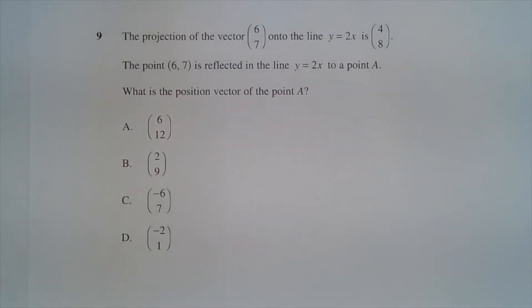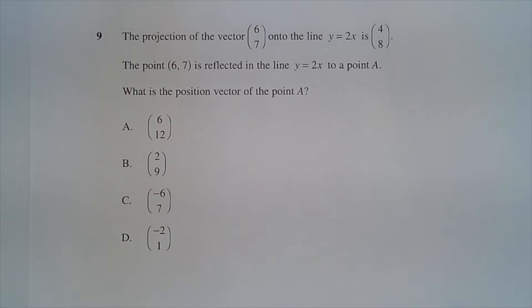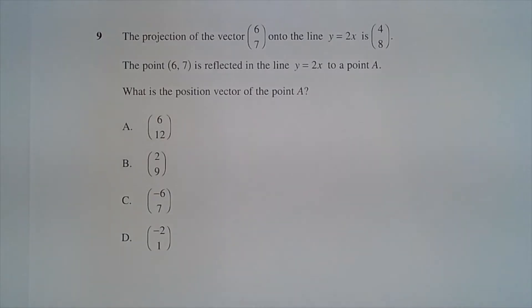Question 9. The projection of the vector 6i plus 7j onto the line y equals 2x is 4i plus 8j. The point 6 comma 7 is reflected in the line y equals 2x to a point A. What is the position vector of the point A?